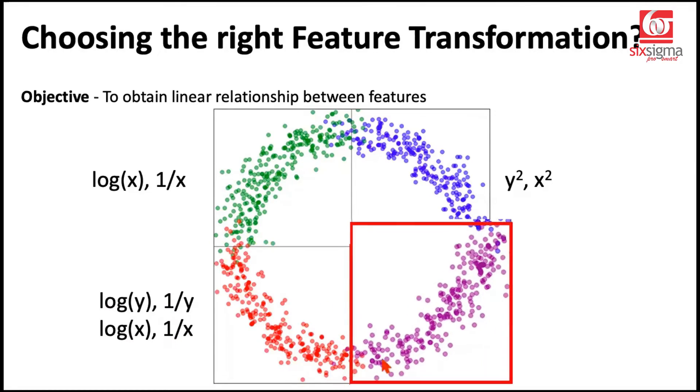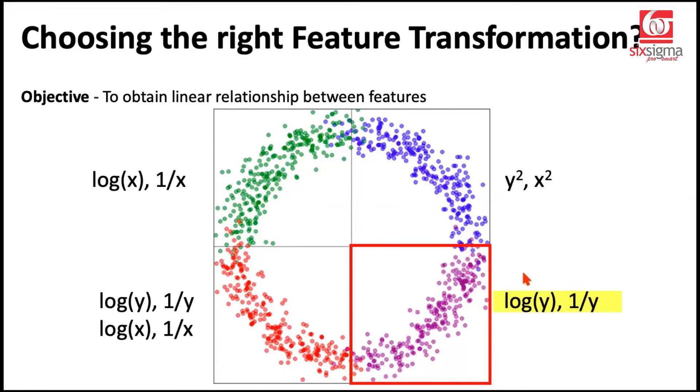And now moving on to the fourth quadrant, when the shape is like this, the recommended transformations are only on y this time. You will apply the transformation of log y or one over y. This becomes a very important slide for you to remember. While analyzing data, you may not find all the features which follow a strict relationship, which is linear to begin with. You may have to bring it to a format where you can apply a linear model to solve the problem. And that's where transformations play a very important role.